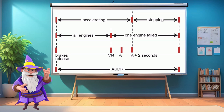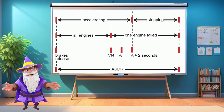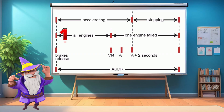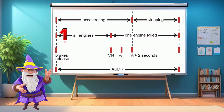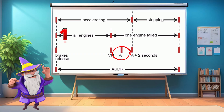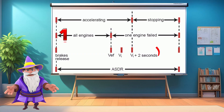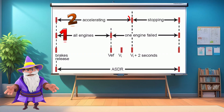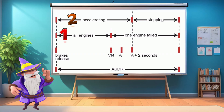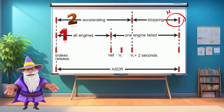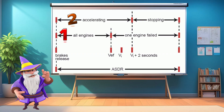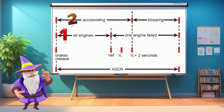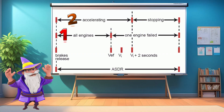Let's calculate it. The accelerate stop distance required is the longest of: one, the distance taken to accelerate to V-ref, lose one engine, continue accelerating to V1, continue accelerating for two seconds, and then come to a full stop. The longest of those two distances is your accelerate stop distance required. Remember, reverse thrust is not taken into account in this calculation.